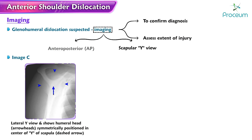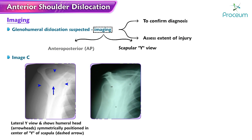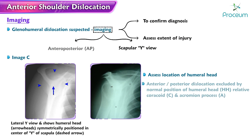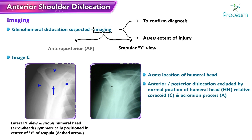The scapular Y view is used to assess the location of the humeral head. Anterior or posterior dislocation are excluded by a normal position of the humeral head relative to the coracoid and acromion process, while the inferior portion of the Y is formed by the body of the scapula.